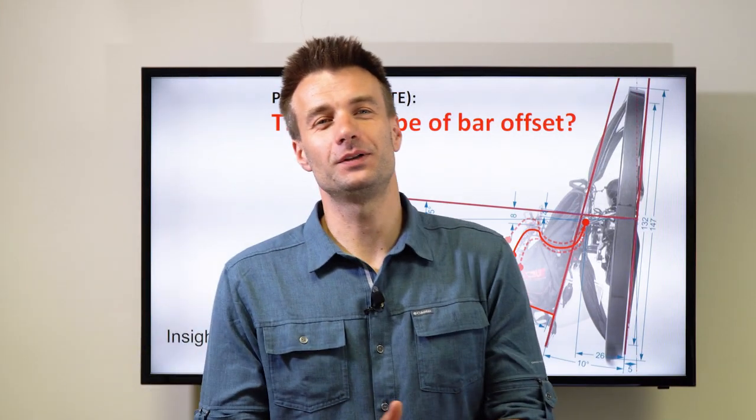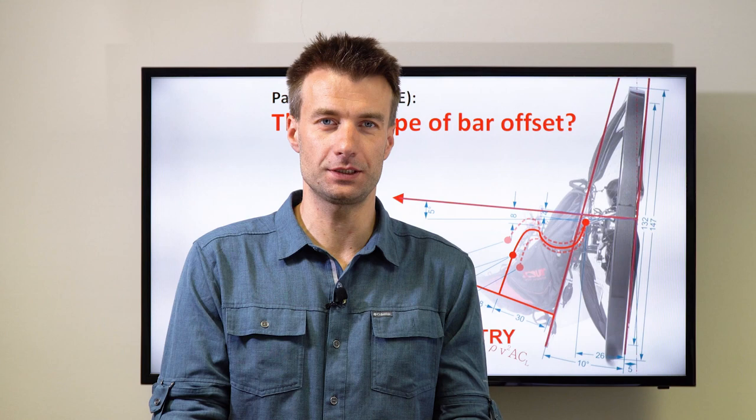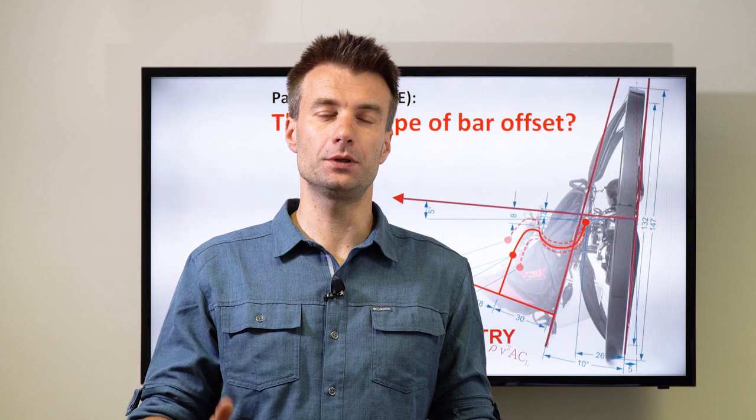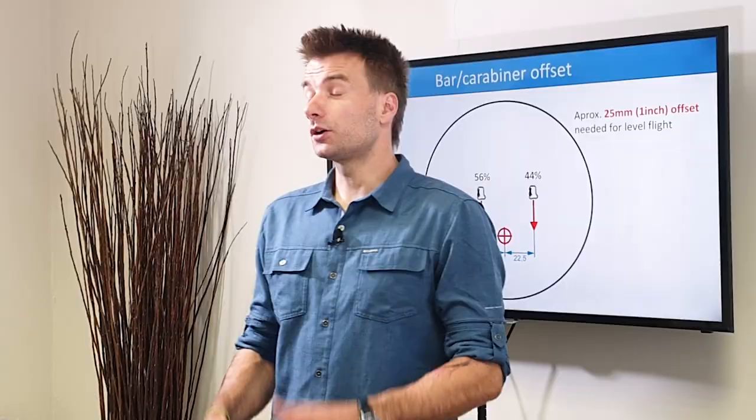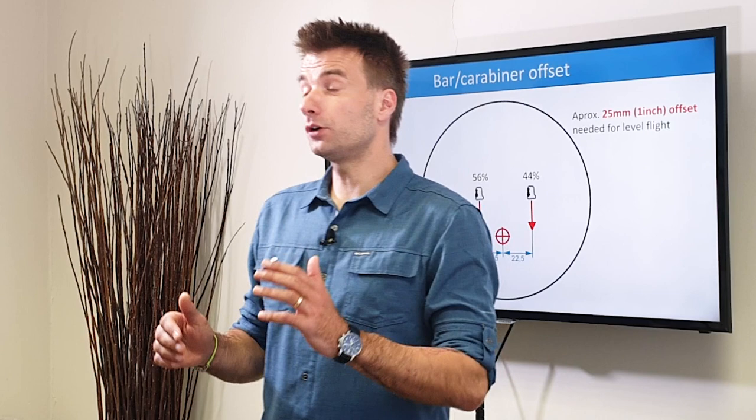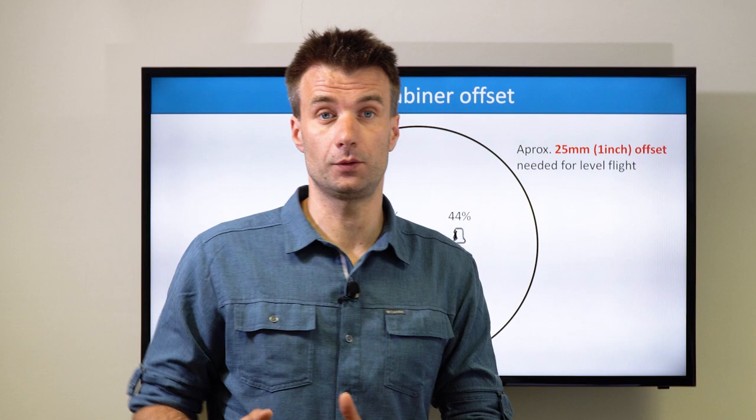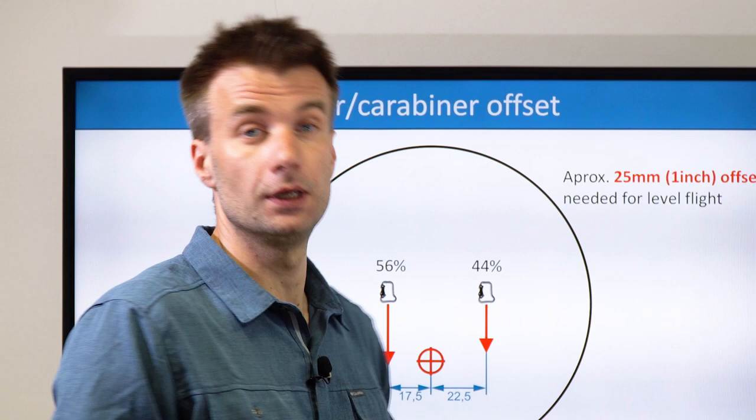Welcome back to the paramotor geometry classroom. We are shooting some update videos to the existing series, squeezing one part in between parts 14 and 15. Let's call it 14.2. I want to be more specific on different types of bar offset to compensate for torque. A quick recall on a screen from the previous part 14 then explained the reason for bar offset. If you haven't seen that part, if you don't remember this picture, go and watch that before.